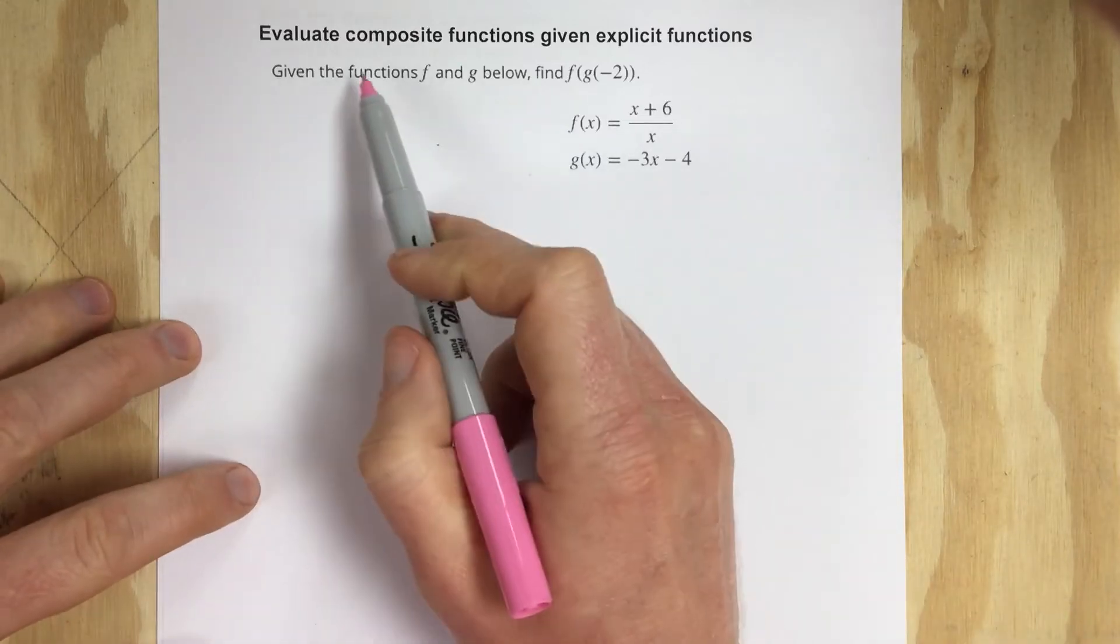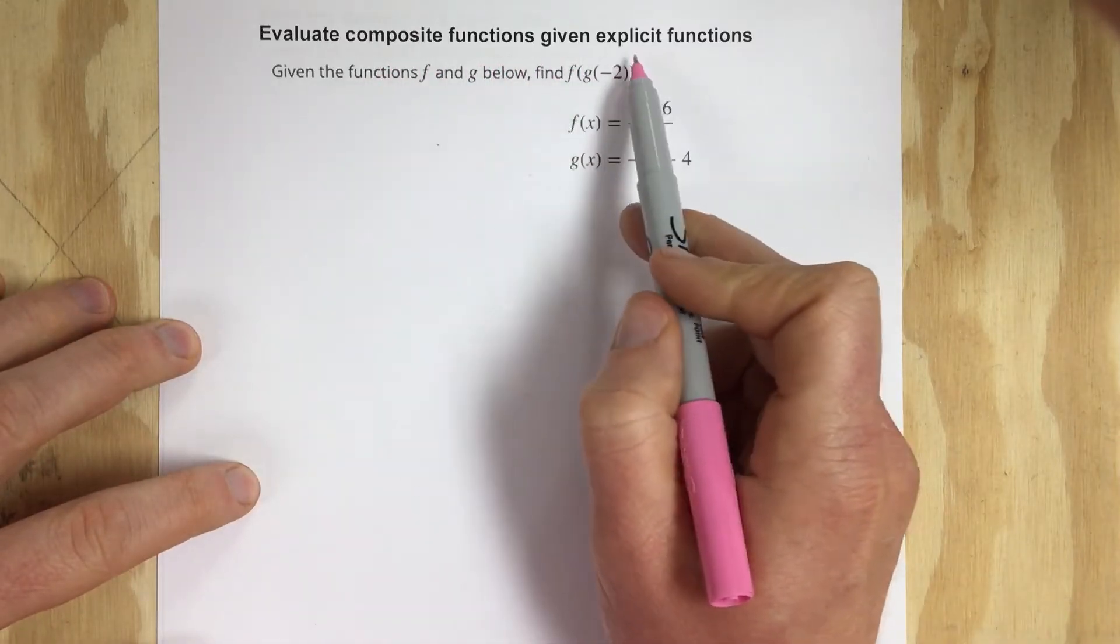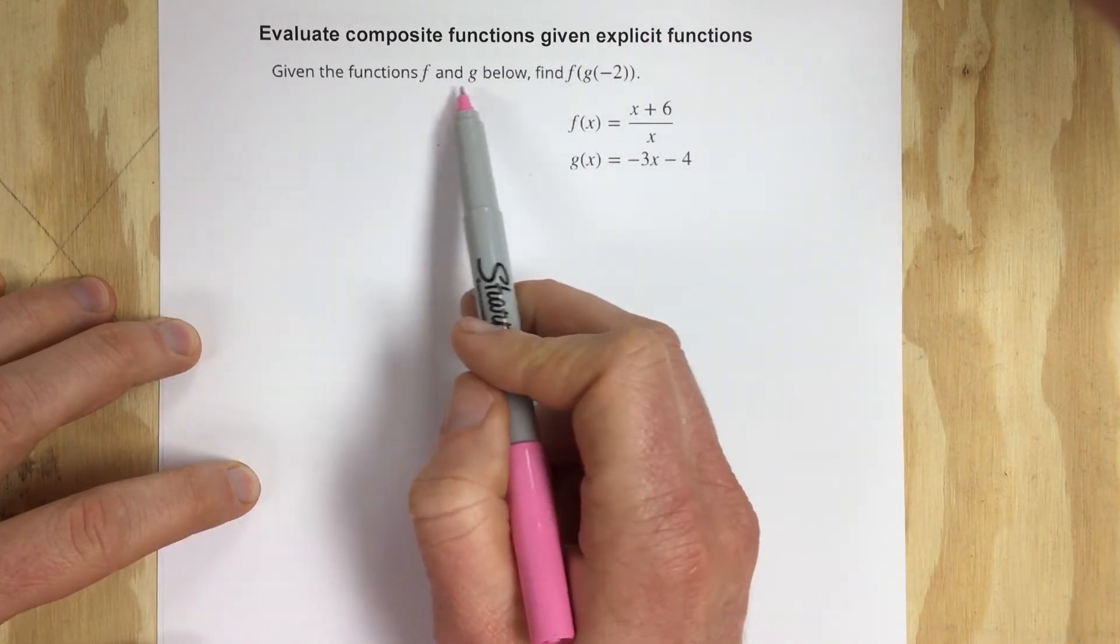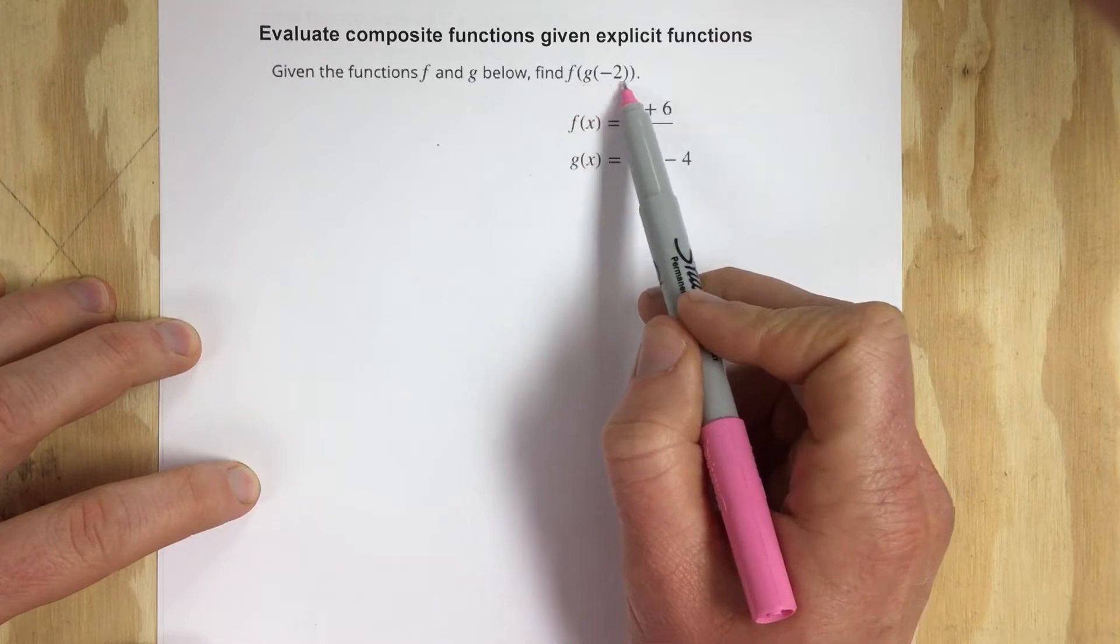In this problem they want you to evaluate composite functions given explicit functions. So they tell us that we have functions f and g and they want us to find f of g of negative 2.